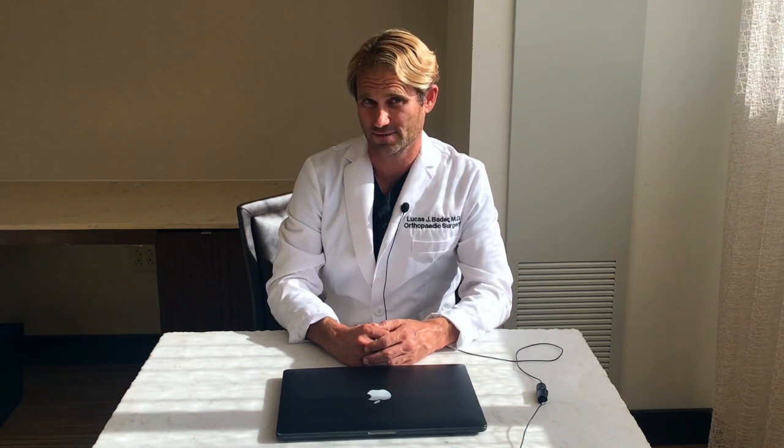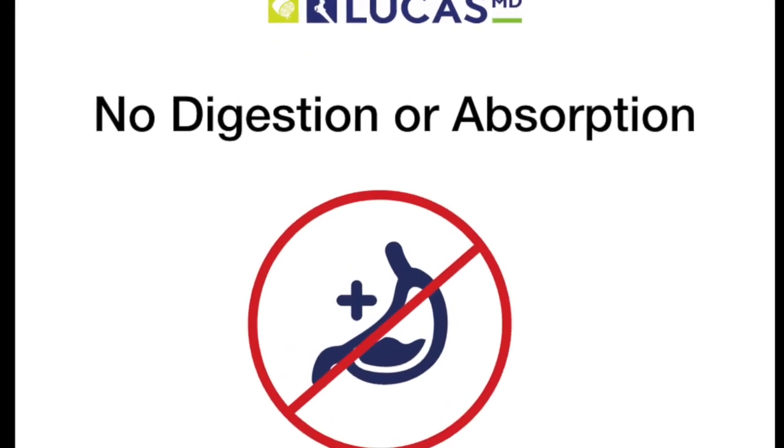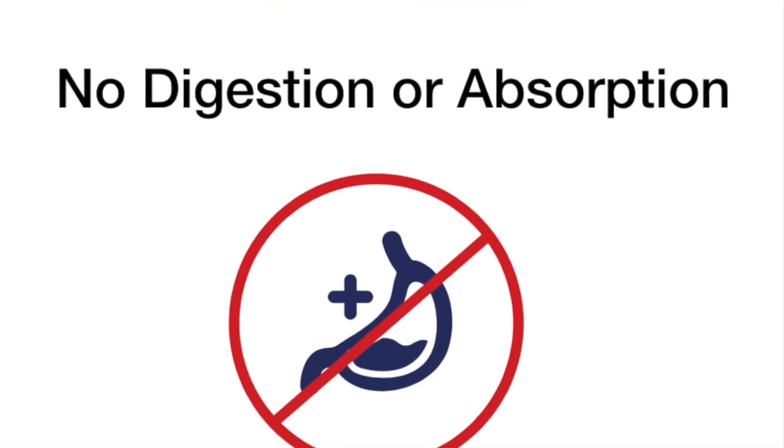Number two, prebiotics cannot be digested or absorbed in the stomach or small intestine. Number three, prebiotics are fermented or broken down by bacteria or yeast to fatty acids, simple sugars, or alcohols.